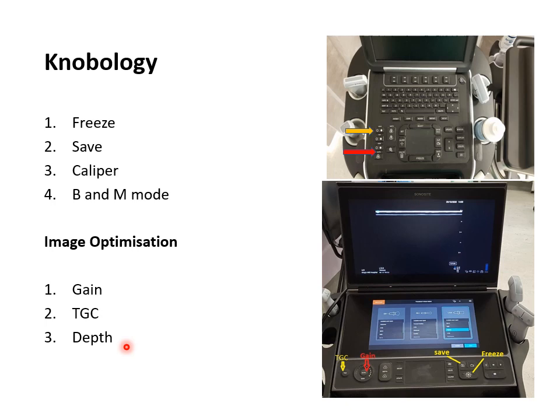For image optimization you can use three settings: gain, TGC, and depth. When sound waves travel from one structure to another and reflect back, they lose energy — the deeper the structure, the more energy is lost. Gain allows you to amplify the returning signals so that deeper structures can be compensated. TGC, or time gain compensation, is similar to gain but allows you to selectively amplify the returning signal at certain depths. So gain amplifies all signals, while TGC lets you choose whether to amplify signals from superficial, middle, or deeper structures.